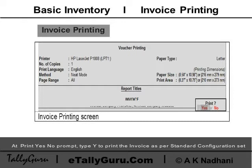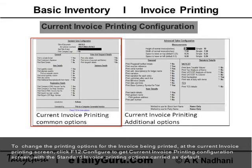At the Print Yes/No prompt, type Y to print the invoice. As per standard configuration, to change the printing options for the invoice being printed at the current invoice printing screen, click F12 Configure to get the current invoice printing configuration screen.